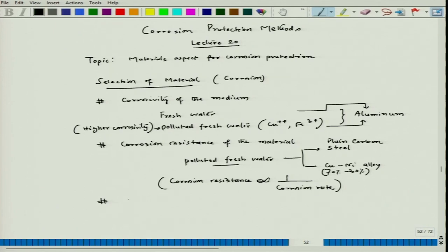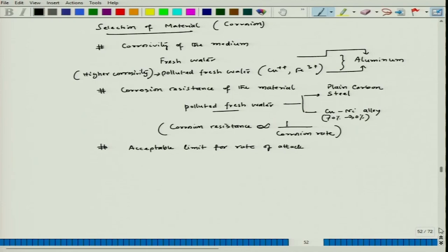The third factor is the acceptable limit for rate of attack. Let us say we allow a material in a particular corrosive solution — we are fixing the corrosivity — and we allow, say, 0.25 mm per year as the acceptable corrosion rate. If some material shows a corrosion rate more than that, that material will not be suitable in that particular medium. So the acceptable limit for rate of attack needs to be prefixed before we design or select a material in a corrosive solution.